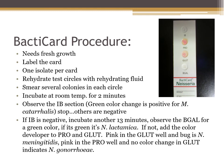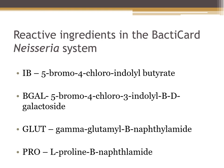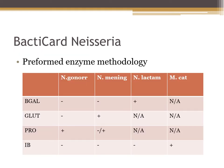Here's a list of reactive ingredients in the Bactocard Neisseria system that you need to recognize. For example, the IB well is positive for Moraxella catarrhalis and contains 5-bromo-4-chloroindolylbutyrate. In the enzymatic method, if you have Neisseria gonorrhoeae your PRO is positive; Neisseria meningitidis has a positive GLUT but variable PRO; Neisseria lactamica has a positive BGAL; and Moraxella catarrhalis has a positive IB. Those are your key reactions for the different Neisseria species.